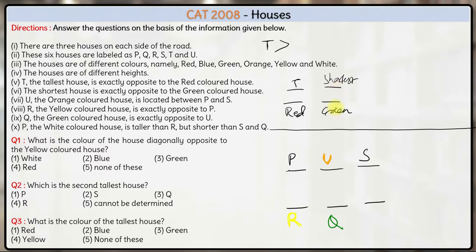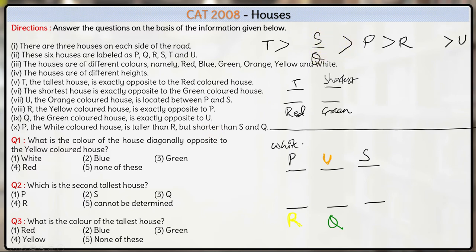We also know the shortest house is exactly opposite to the green coloured house — that means U is the shortest house. Now finally, P the white coloured house is taller than R but shorter than S and Q. So out of S and Q we don't know which one is taller. S and Q are taller than P, which is taller than R. So of the six houses: T is the tallest, U is the shortest, S and Q are the second and third tallest, and P and R are the fourth and fifth tallest.